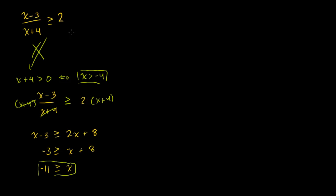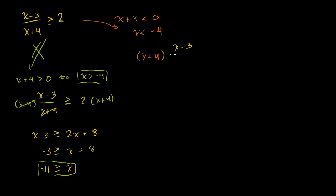So let's assume what happens when x plus 4 is less than 0. That's an equivalent statement to x is less than minus 4. So if we assume x is less than minus 4, then when we multiply both sides of this equation times x plus 4 — you're multiplying x minus 3 over x plus 4 and your 2 by x plus 4 — since x is less than minus 4, which makes this expression negative, since we're multiplying both sides by a negative, we swap the inequality.